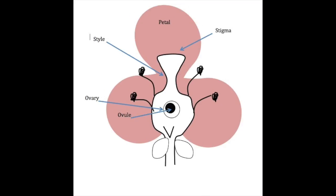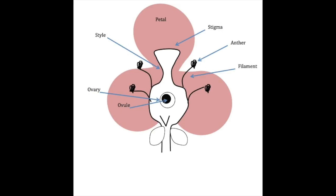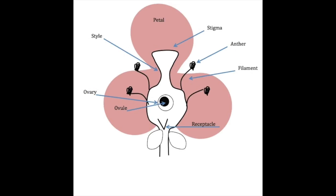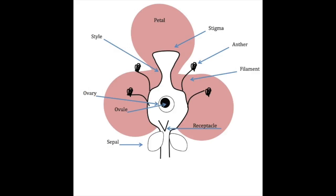Where does the pollen come from, though? The anther, which is held up by the filament. The receptacle connects the flower to the stem, and the sepal protects the developing bud.